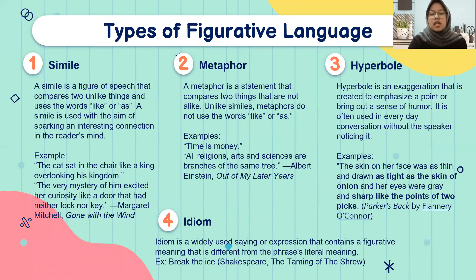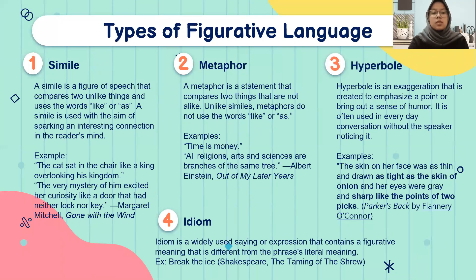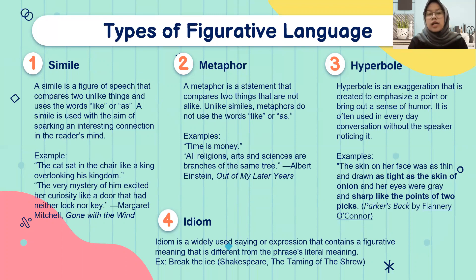Next, we have the types of figurative language. There are actually many types, but we will cover eight. The first is simile — a figure of speech that compares two unlike things and uses the words 'like' or 'as.' For example: 'The cat sat in the chair like a king overlooking his kingdom.' The word 'like' is used to compare two unlike things.